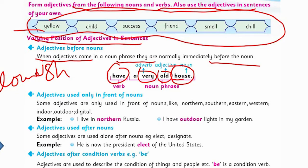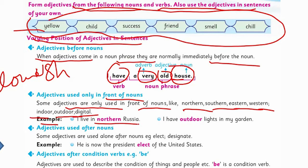Some adjectives are only used in front of nouns — like northern, southern, eastern, western, indoor, outdoor, or digital. For example: 'I live in northern Russia' or 'I have outdoor lights in my garden.'